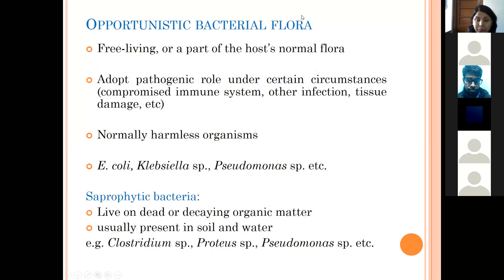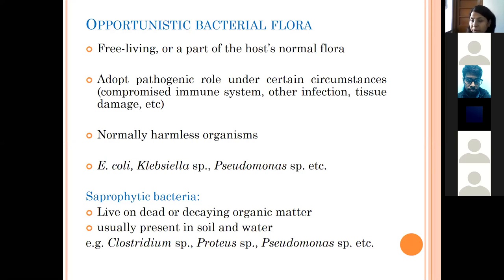Opportunistic bacterial flora consists of normally free-living organisms or part of the host's normal flora. As the name suggests, if they get the opportunity, they become pathogenic. They have a pathogenic role under certain circumstances such as lowered host immunity, existing infections, tissue damage, or stress. These bacteria generally have low virulence, but under suitable conditions, these harmless organisms convert into pathogens and cause disease. Examples include E. coli, Klebsiella, and Pseudomonas.